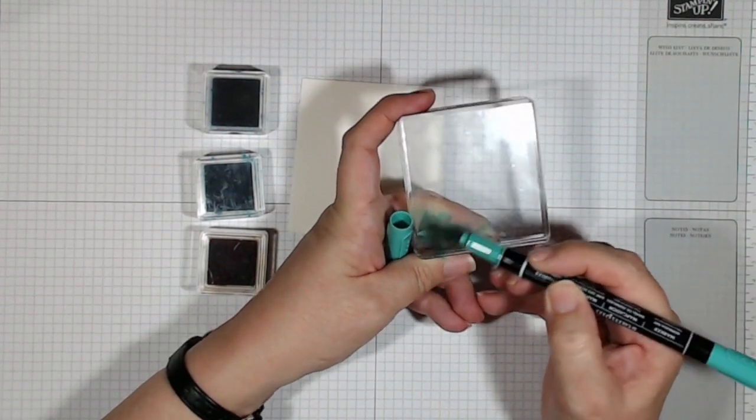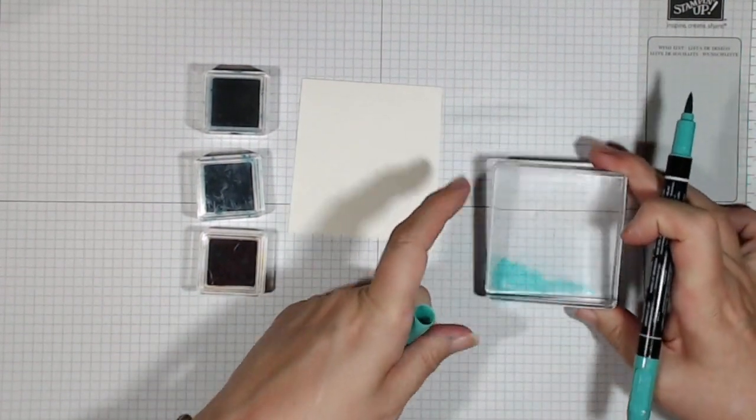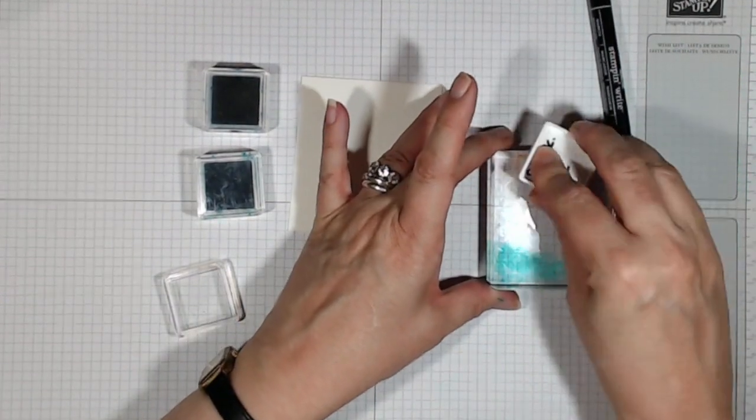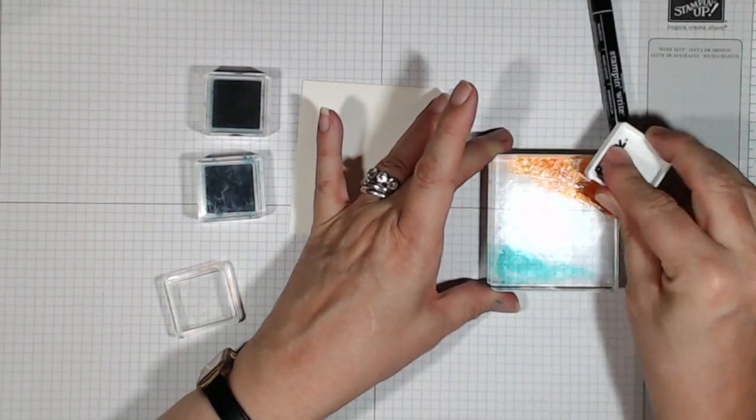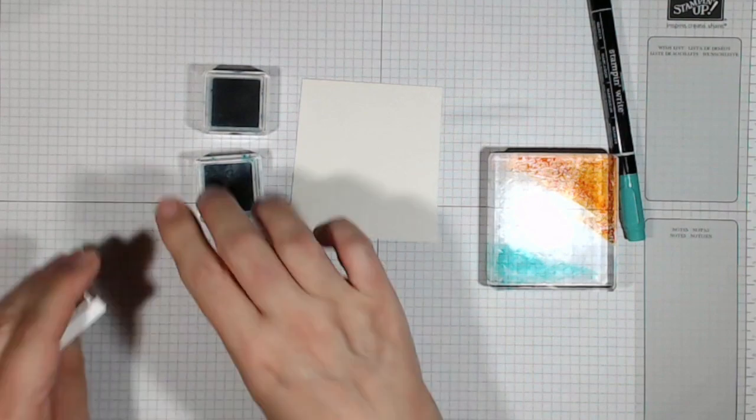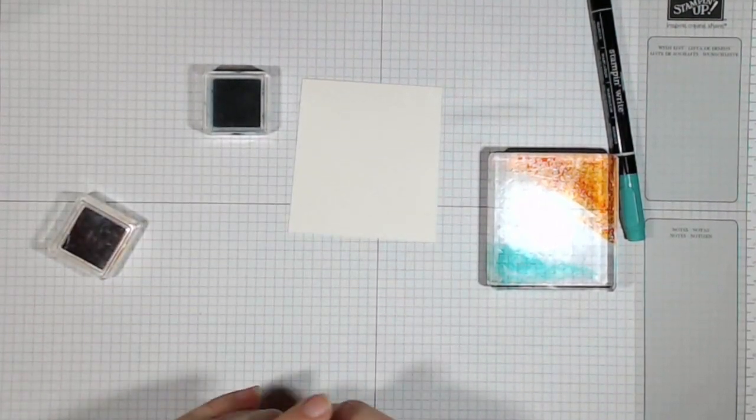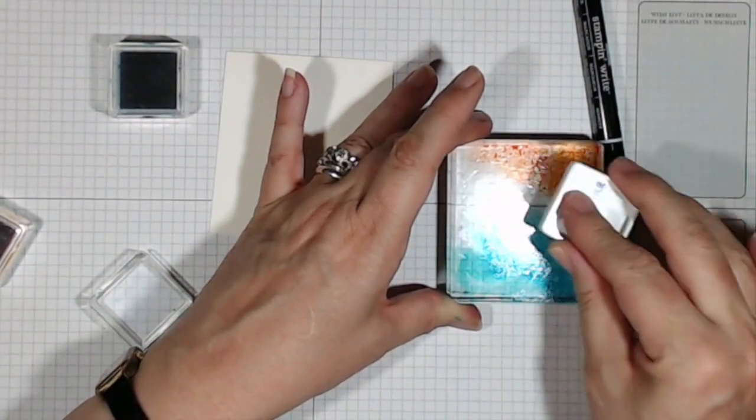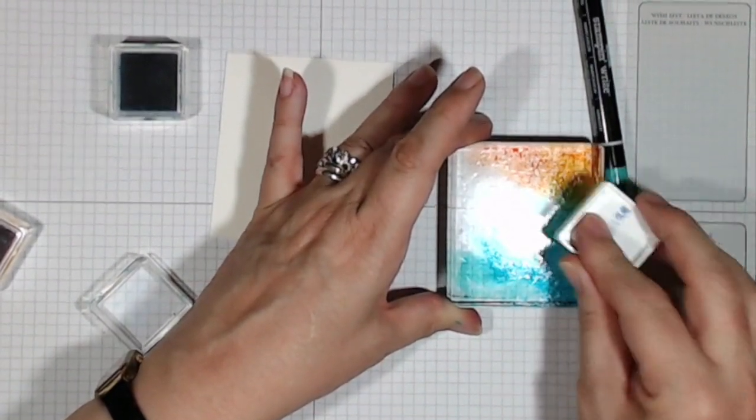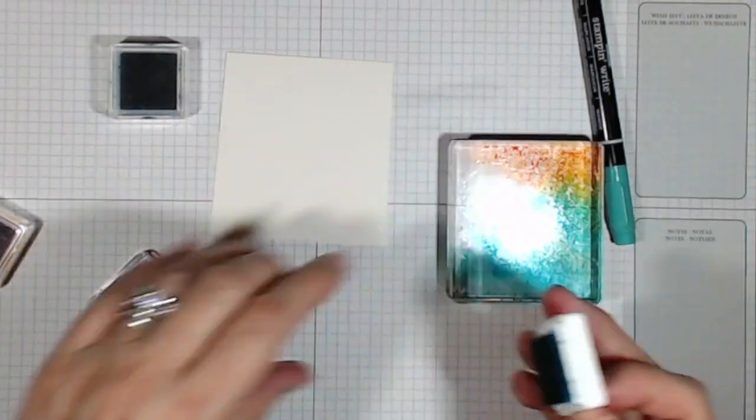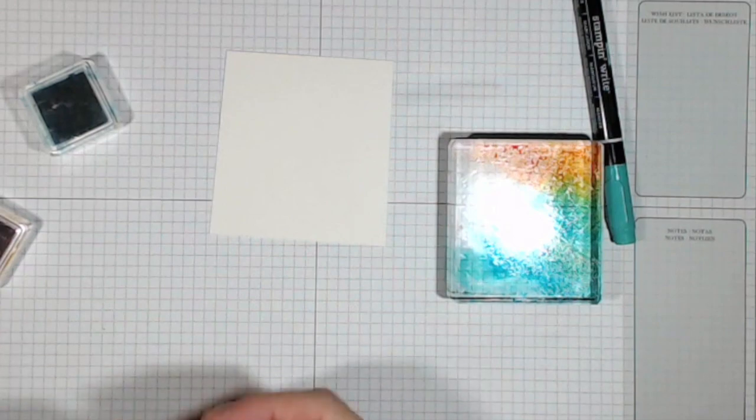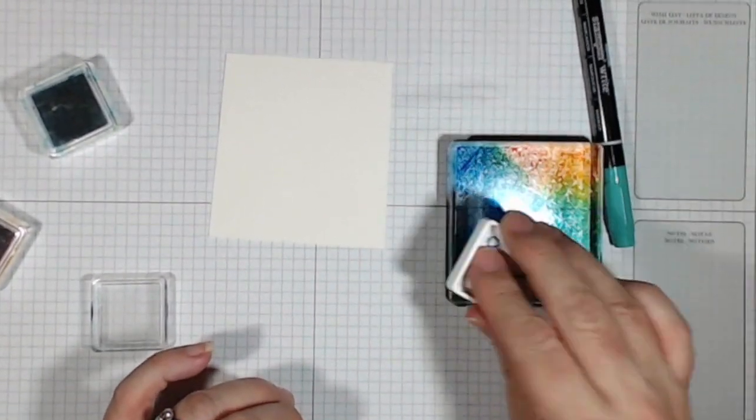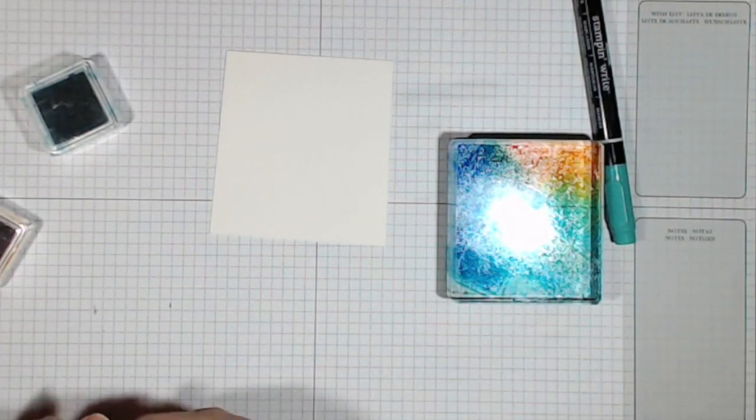I'm going to take my acrylic block and apply some color. I'll start with scribbling on some Bermuda Bay. Let's have some Pumpkin Pie around there - that looks nice. What's next? Tempting Turquoise, I think. I'm applying these quite generously. I'm letting the colors run together, not being precious about it at all. They're just mixing up and being really good friends, having a nice time.